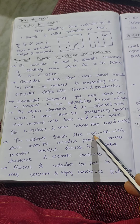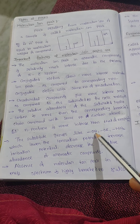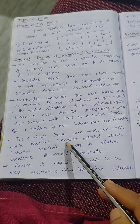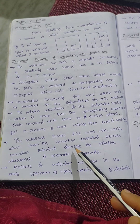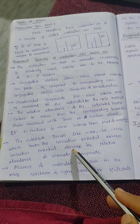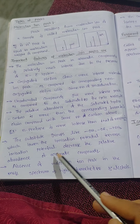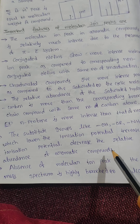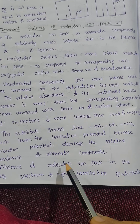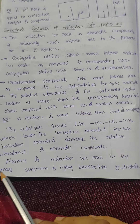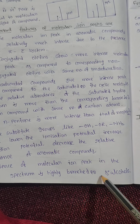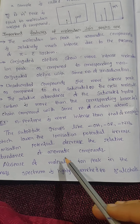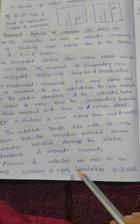Substituent groups like OH, OR, and NH2 — hydroxyl, alkoxyl, and amine groups — lower the ionization potential, which decreases the relative abundance of aromatic compounds. Additionally, absence of a molecular ion peak in the mass spectrum is observed in highly branched or tertiary alcohols.